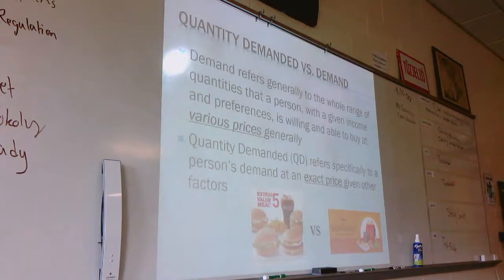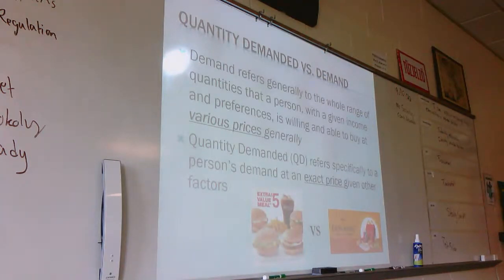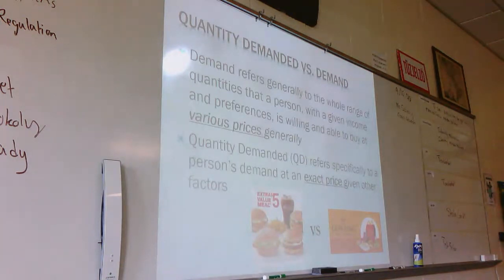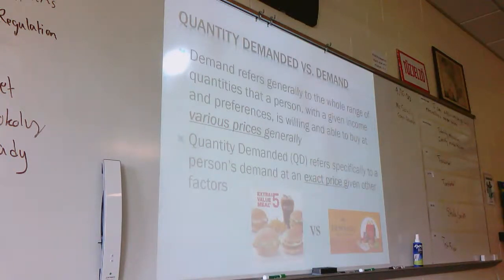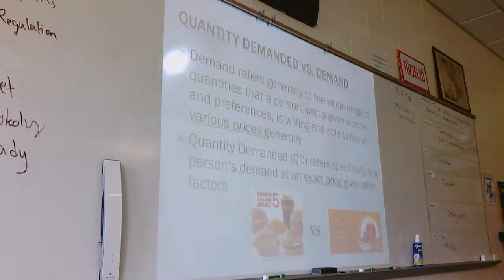People get demand and quantity demanded mixed up. Using McDonald's as an example — at Five Guys, my quantity demanded for a burger would be one burger, at around $10 or $11. However, if I go to McDonald's, my quantity demanded is probably going to increase because the price is decreasing. If a burger is $1 or $1.50, I might get two or three of them — because they're smaller and cheaper. So quantity demanded is looking at specific prices, how much of that good would be in demand.